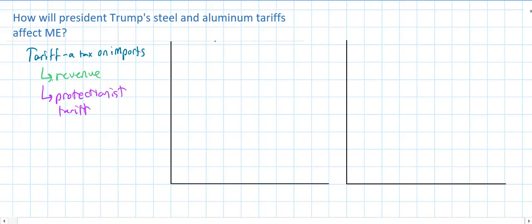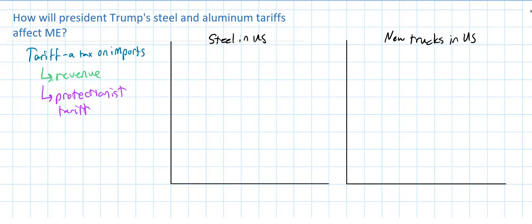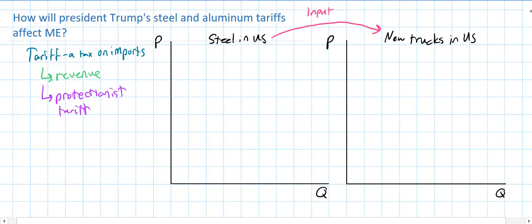To understand the effect that these tariffs are likely to have on US consumers and producers, we're going to look at two different markets. On the left, we'll look at the market for steel here in the United States. On the right, we'll look at the market for new trucks. One thing that all these vehicles have in common is that they require steel as an input — a factor of production needed to produce new trucks. We'll look at the effect on both markets.